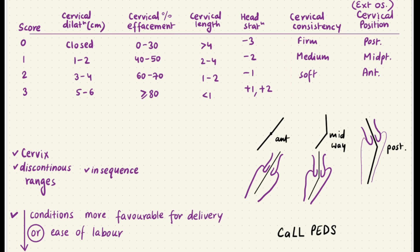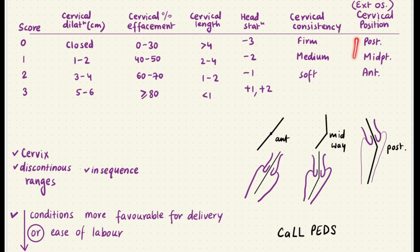Next you have cervical consistency — obviously the more the baby tries to come out, the cervical consistency slowly starts becoming softer, so it goes from firm to medium to soft. The most important thing I wanted to discuss is cervical position, because we mostly don't understand what exactly they're trying to tell with regards to this.